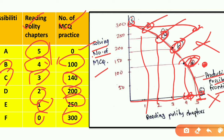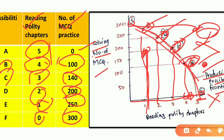You can use points on the curve. What is outside the curve is impossible; what is inside or on the curve is possible. For example, reading fewer chapters and solving 200 MCQs — this is possible. The curve acts as a boundary line, dividing what is possible from what is impossible. This is the production possibility frontier curve.